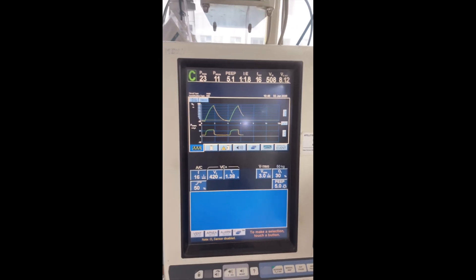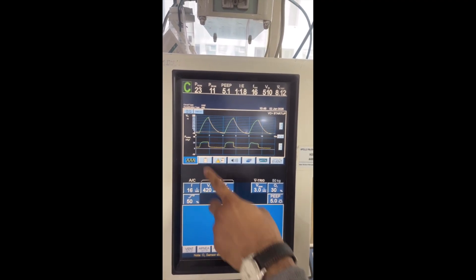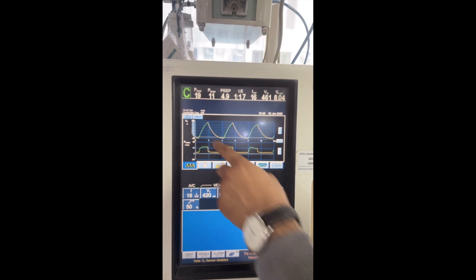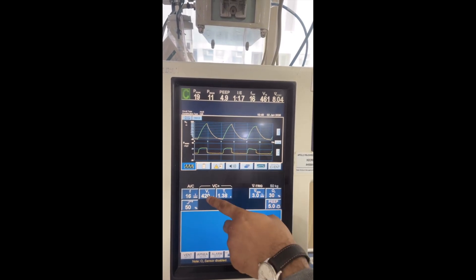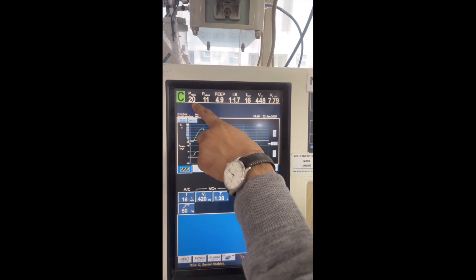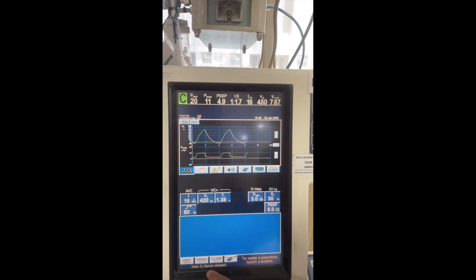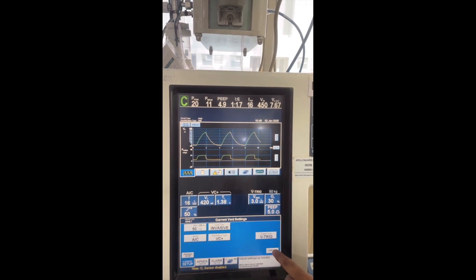Now what will happen? This is VC Plus mode. Now for this tidal volume, this pressure will vary and the ventilator will try to deliver the tidal volume. Now it is coming high, so it will slowly drop the pressure. Now you see it's coming to 20, then it will further drop.